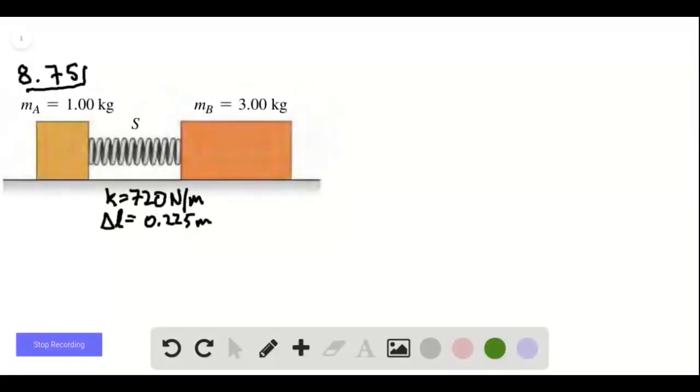Problem 8.75. So you have these two blocks that have a spring compressed between them, and we're told what its spring constant is and how much it's been compressed.